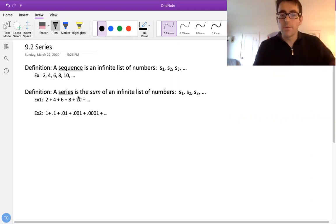So that's one example. Another example might be something like 1 plus 0.1 plus 0.01 plus 0.001, etc. So we have two examples.